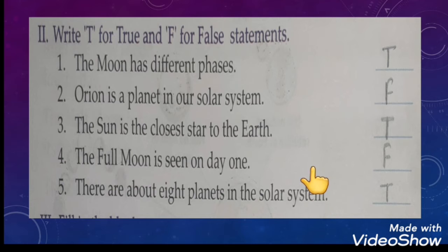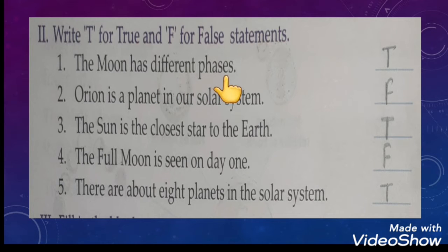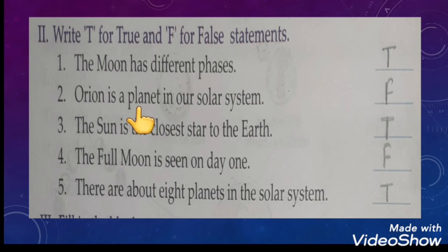Now we have to write T for true statement and F for false statement. First: moon has different phases — yes, the moon has different phases, so it is a true statement. Second: Orion is a planet in our solar system. Is Orion a planet? No, Orion is a constellation, so it is a false statement.